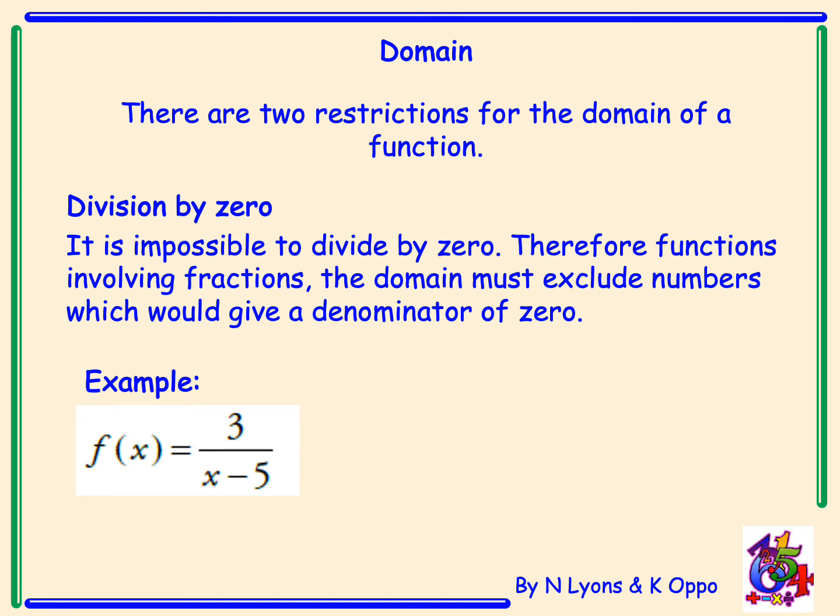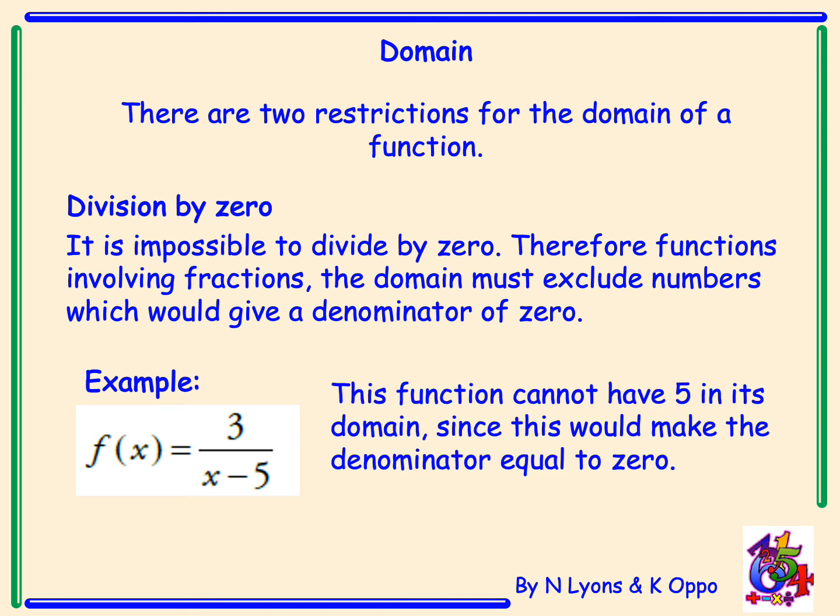Looking at an example, here we've got a function f of x equals 3 divided by x minus 5. This function cannot have the number 5 in its domain, since this would make the denominator equal to zero. The domain would formally be expressed as x is a member of all real numbers but x could not equal 5.